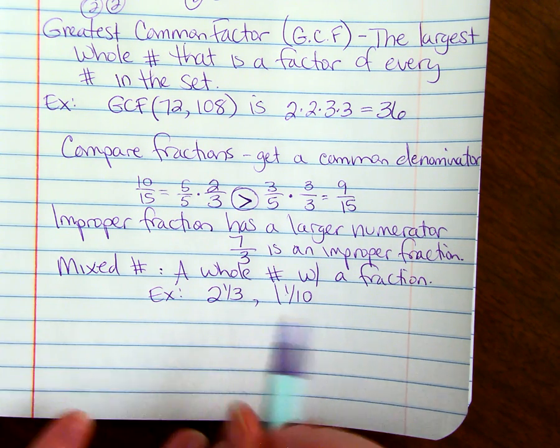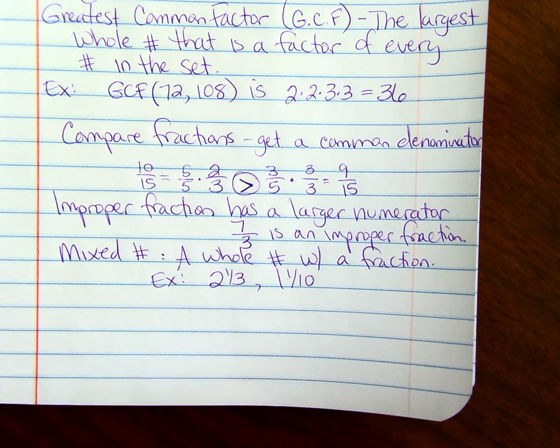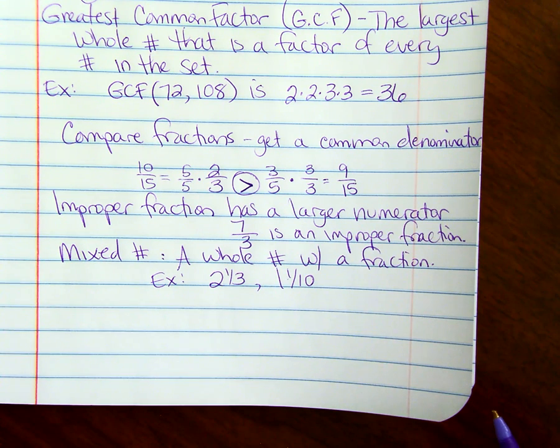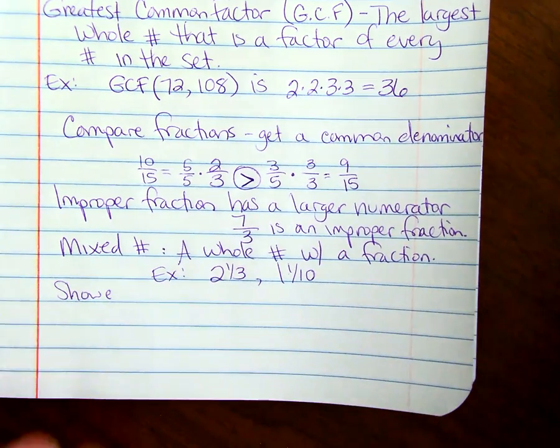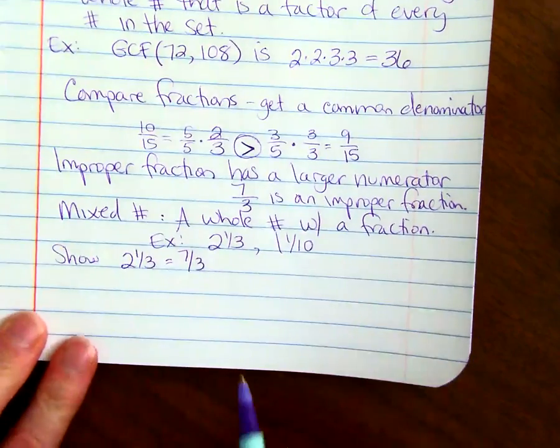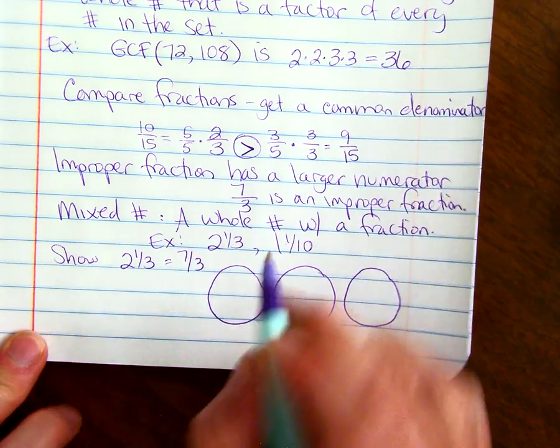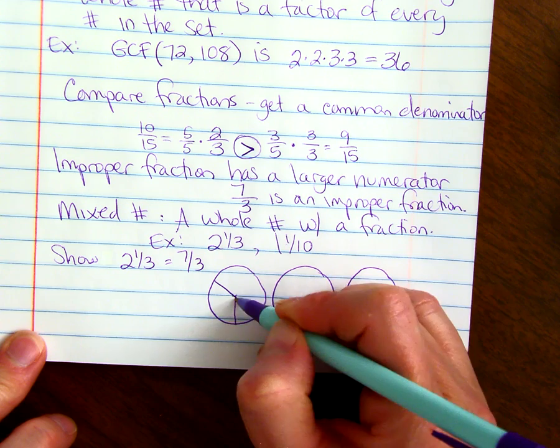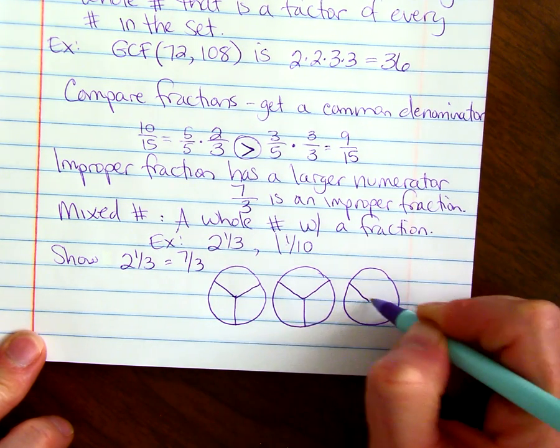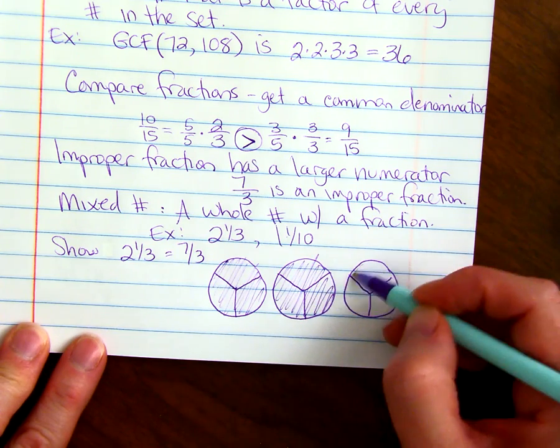If I wanted to demonstrate 2 and 1 third using a sketch, sometimes you're asked, just use a sketch and show 2 and 1 third is equivalent to 7 thirds. We'll show 2 and 1 third equals 7 thirds. To show that, we would just draw 3 circles. Each of them divided in thirds. And then I'm going to shade 2 whole ones, and 1 third of the third one.